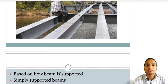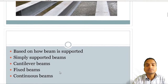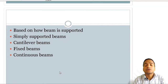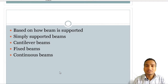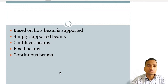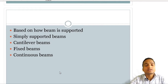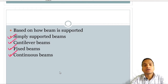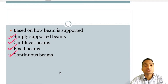Beams are also classified on the basis of the type of support provided. We have studied this in our mechanics course — simply supported beams, cantilever beams, fixed beams, and continuous beams. We know the difference between the types of supports in all four beam types.